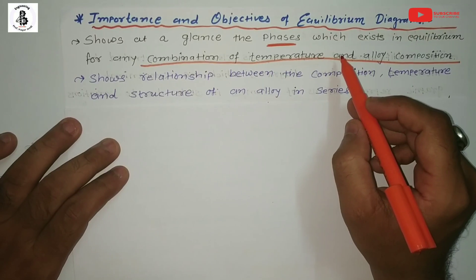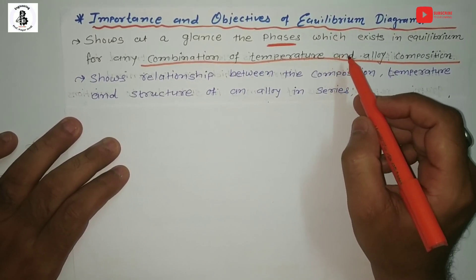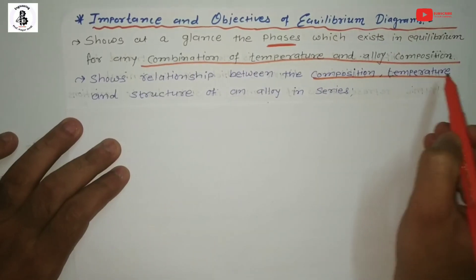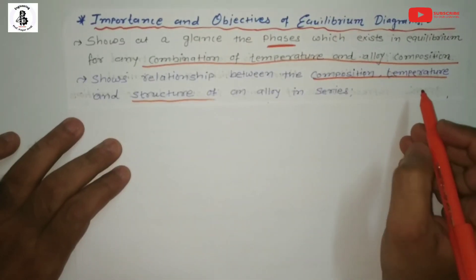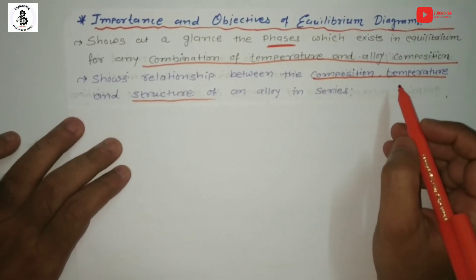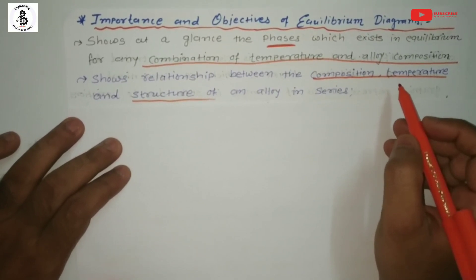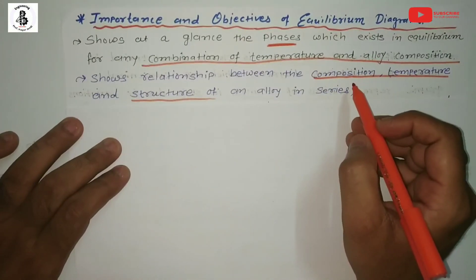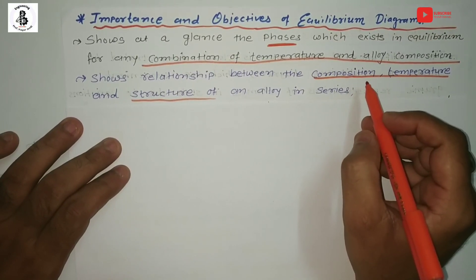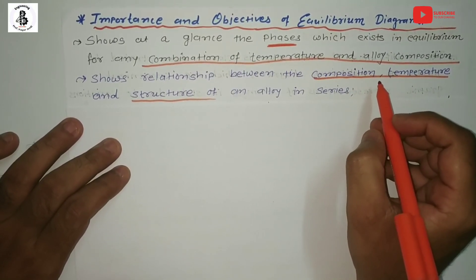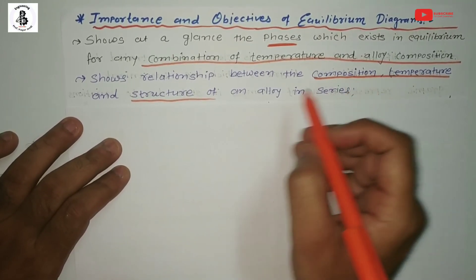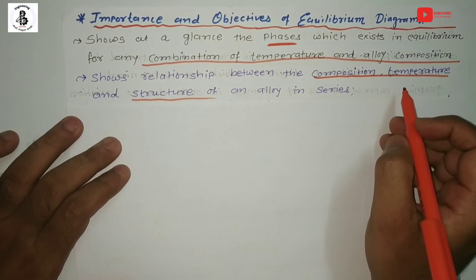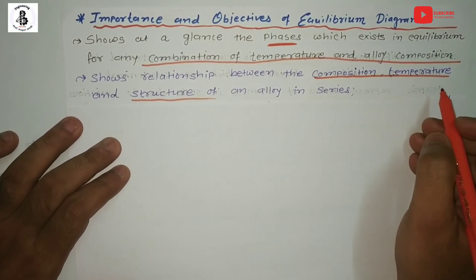According to the different weight percentages of alloy compositions, different kinds of phases are formed, representing different mechanical properties — either a soft phase or a hard phase, depending on the set of conditions. It also shows the relationship between composition, temperature, and structure of an alloy. The structure depends on the solubility and the size of solute and solvent atoms, forming either substitutional or interstitial solid solutions.